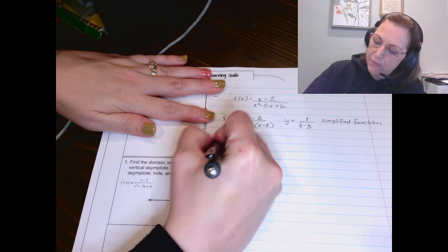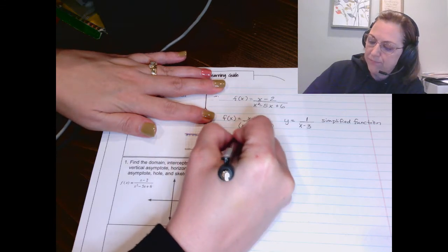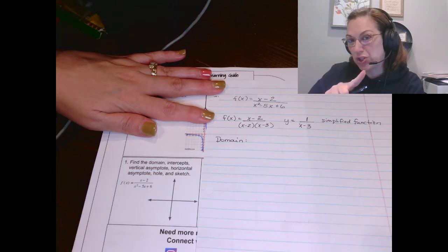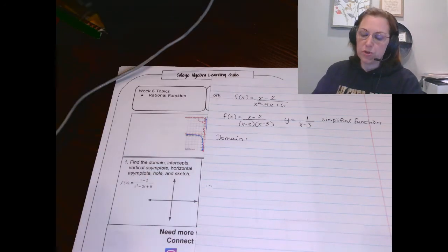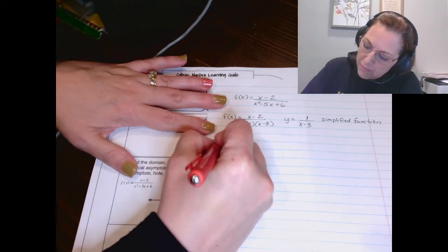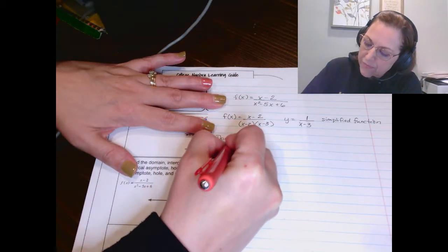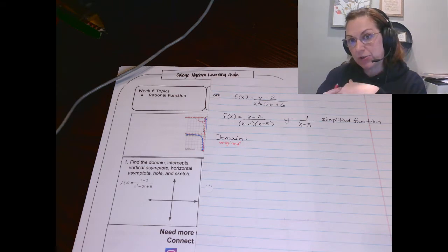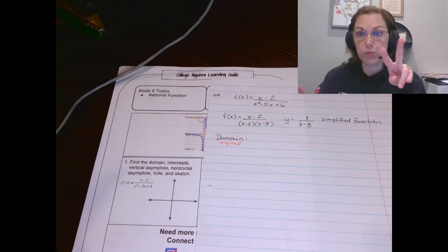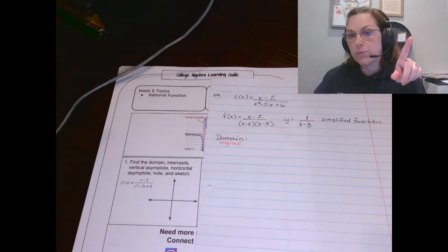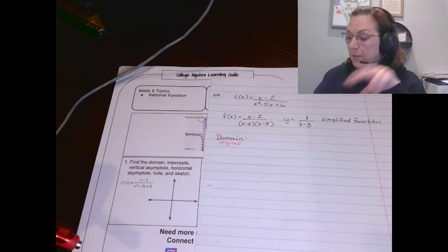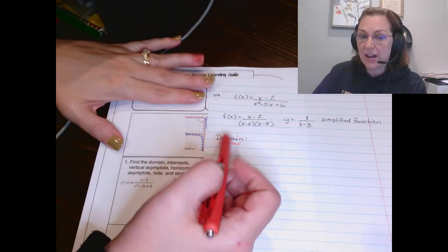So the first thing we're looking for is the domain. The domain comes from the original function. So put yourself a little note. Domain comes from the original function. And if you saw part 1 of the week 6 learning guide, you know we have two rules for domain. Square roots cannot be negative. And denominators cannot equal 0.